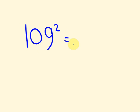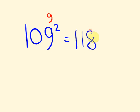Let's go to the next one. What about 109 squared? This is 9 more than 100, so 9 plus 9 first is 18, giving us 118. And 9 times 9 is 81. So the answer is 11881. Hopefully you're getting that.